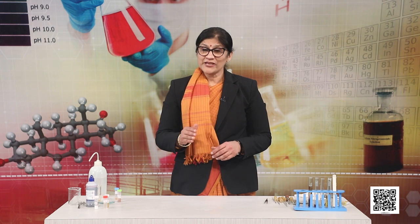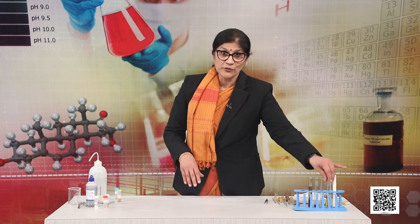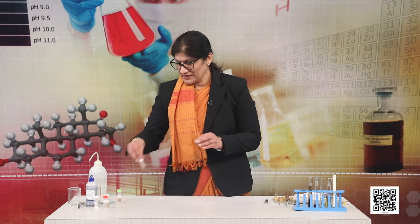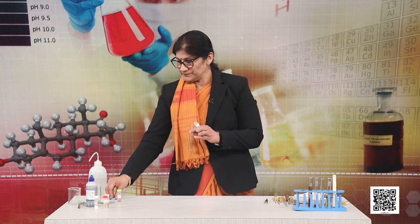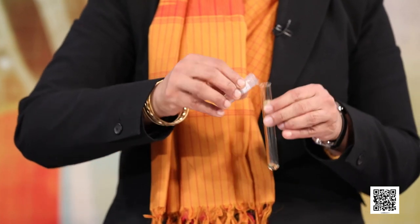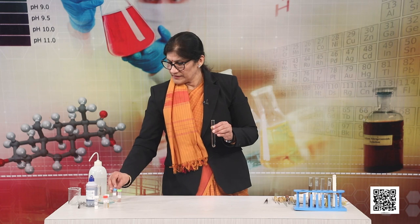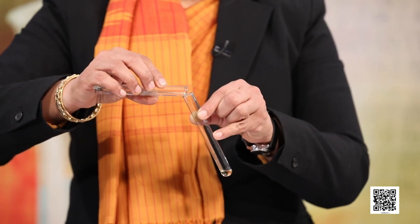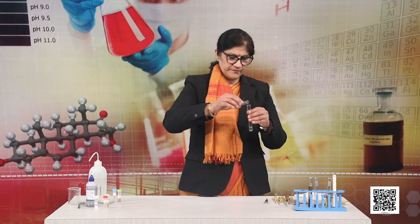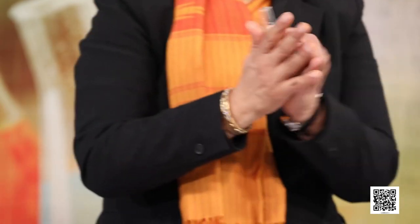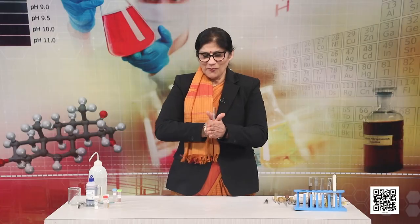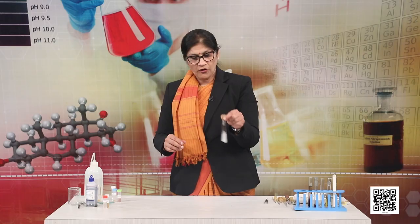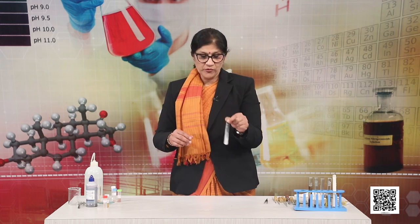This 2,4,6-tribromoderivative of phenol can be prepared easily in the lab. Here I have a little amount of phenol, to which I will add bromine water. By adding bromine water and a little warming, we get a white precipitate of 2,4,6-tribromophenol.